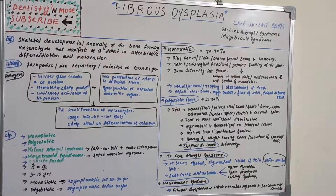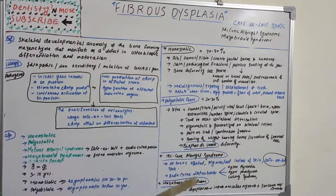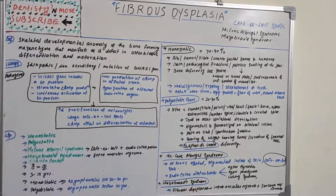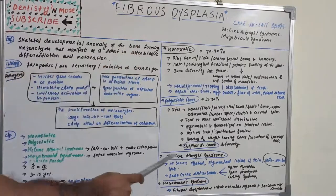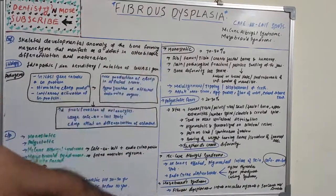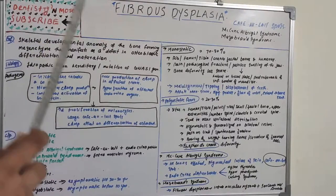McCune-Albright syndrome involves all bones affected along with pigmented lesions called café-au-lait spots and endocrine disturbances including hyperthyroidism, hyperparathyroidism, and Cushing syndrome. This combination — fibrous dysplasia, café-au-lait spots, and endocrine disturbances — defines McCune-Albright syndrome. Mazabraud syndrome is fibrous dysplasia combined with intramuscular myxoma and sarcomatous (carcinomatous) changes. Café-au-lait spots are also seen in Mazabraud syndrome.